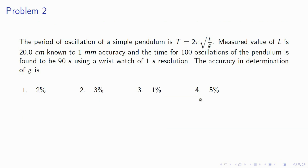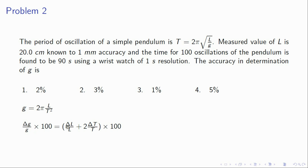Next problem: the time period of oscillation of a simple pendulum. L has length 20 centimeters and the accuracy in measurement is 1 mm; for the time period, 100 oscillations take 90 seconds and the error is 1 second. What is the accuracy in the determination of g? I can write g from this — I square it and take g to the other side. Then I calculate the error: delta g by g into 100 will give the percentage. From this side you will have delta l by l, and since it's t squared, it will be 2 times delta t by t.